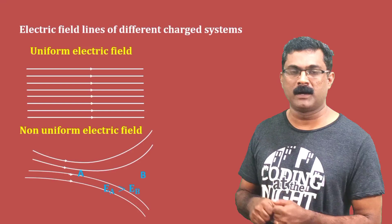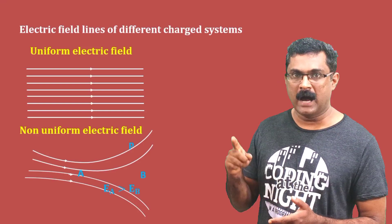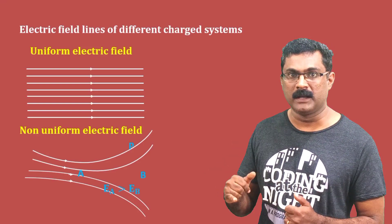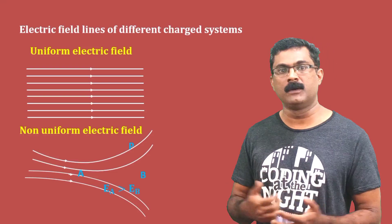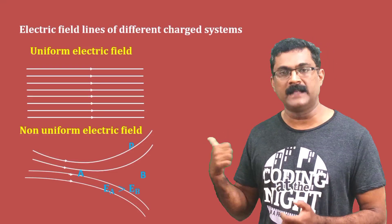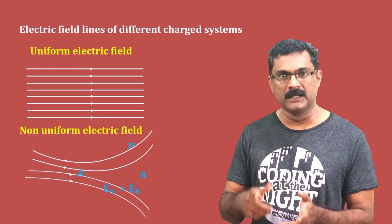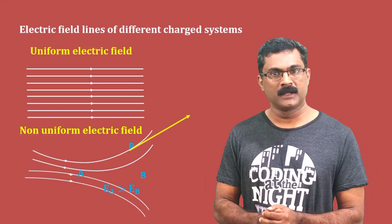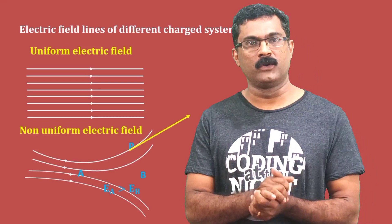Another question: if you have a point in the electric field and you want to find the direction of the electric field at that point, you draw the tangent at that point. The tangent gives the direction of the electric field. This is very important.